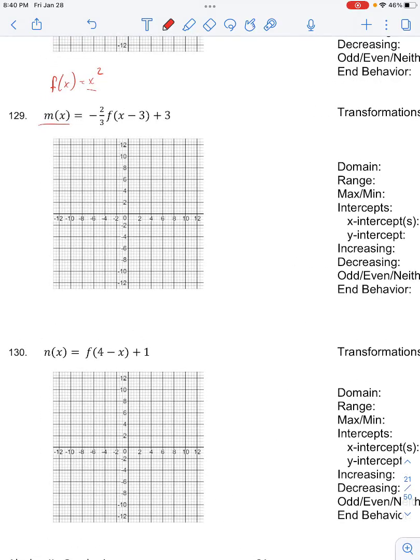So we have this x minus 3 that we're plugging in for x in our original f function. So f of x minus 3 becomes, replacing all x's with x minus 3, that's x minus 3 squared. Then plugging this for f of x minus 3, we get m of x equals negative 2 thirds times x minus 3 squared plus 3.